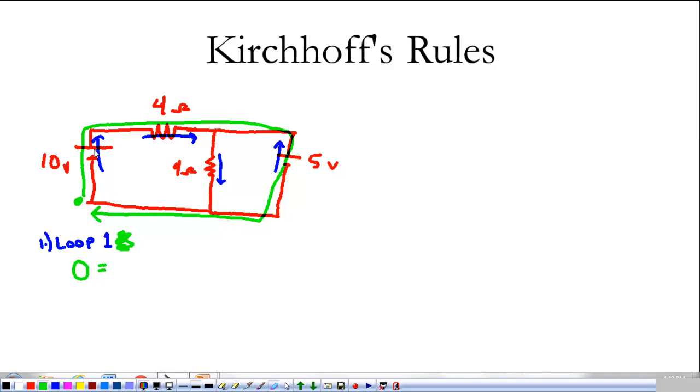I'm going to go the correct way from negative to positive across the battery. That's going to give me 10 volts. Then, I'm going with the current across the resistor, which means I'm going to lose energy. So, we're going to lose 4 ohms times whatever that current through that first resistor is. And then, we're going to go backwards across this battery. So, instead of gaining 5 volts, because we went from positive to negative, we're actually going to lose another 5 volts from that battery.